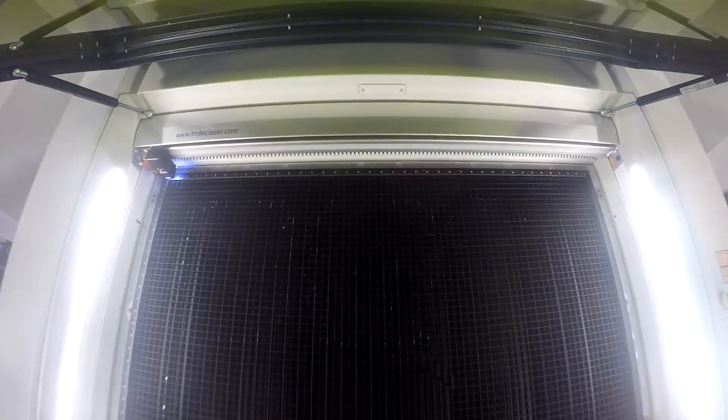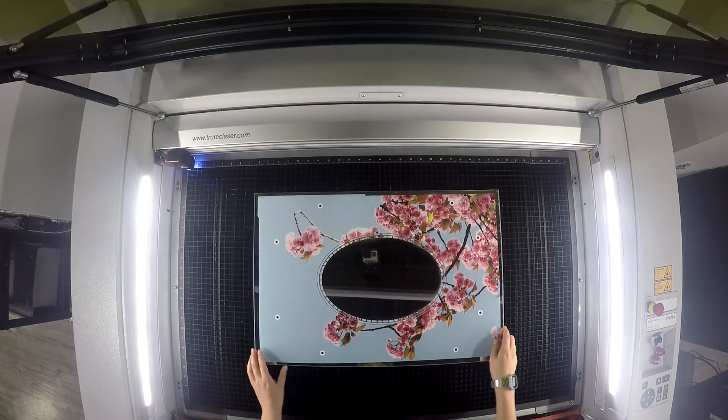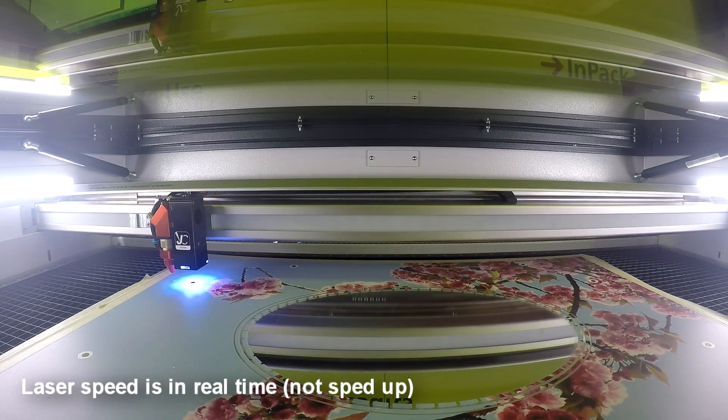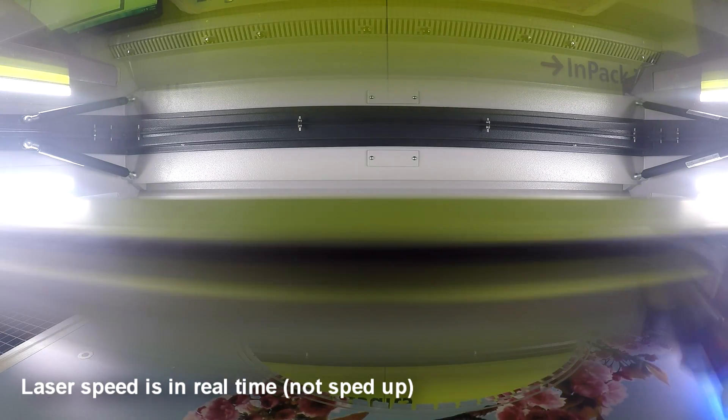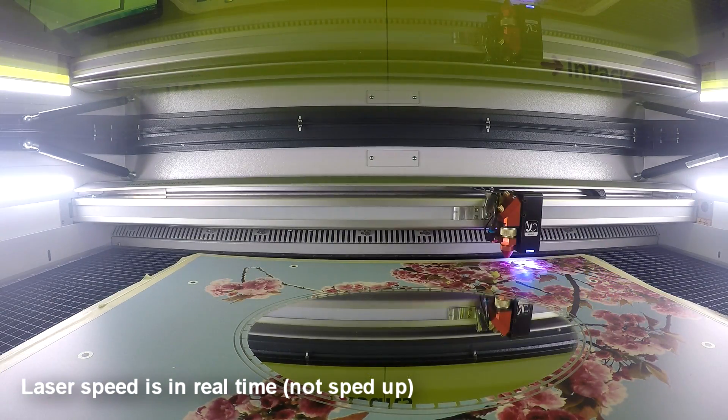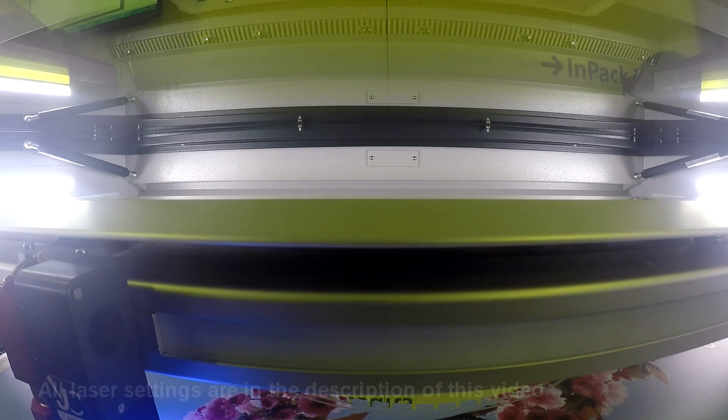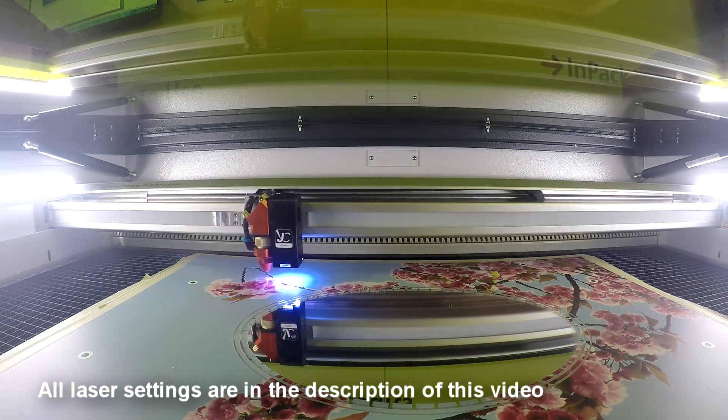We then take our printed TroGlass mirror and place it inside our Trotec Speedy 400 laser machine. This particular 400 is outfitted with the Vision camera system. The Vision camera system reads our registration marks ensuring a perfect cut based on the cut line from our original artwork file.